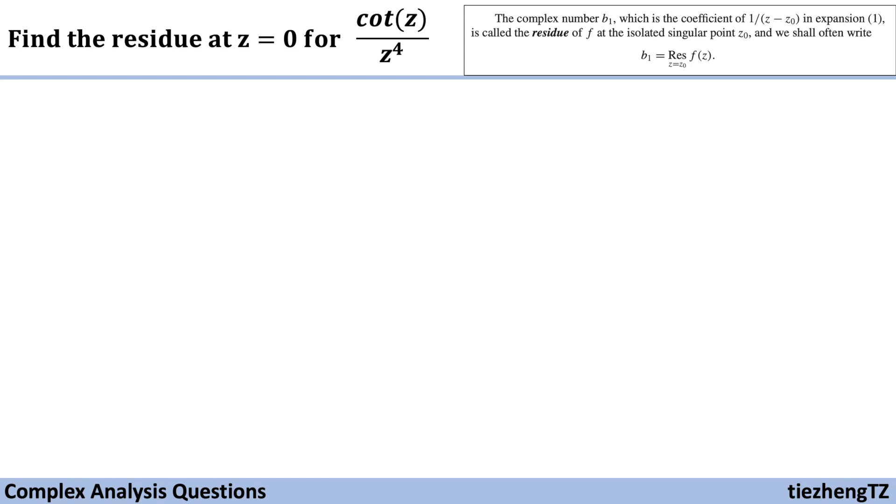Basically back to our question, we know z equals zero is the isolated singular point for the function. So we just need to find the coefficient of the term 1 over z in the expansion form.